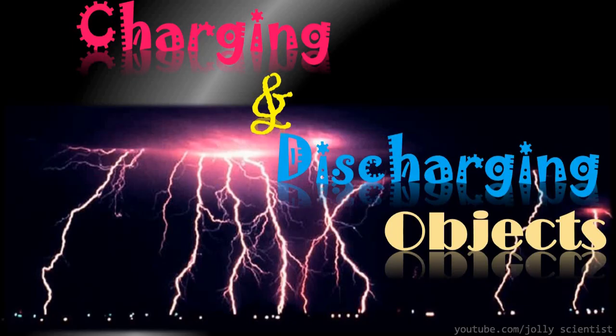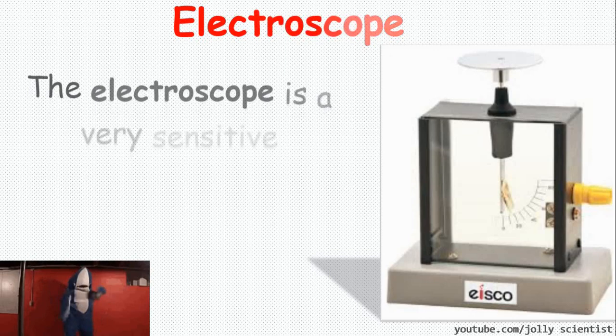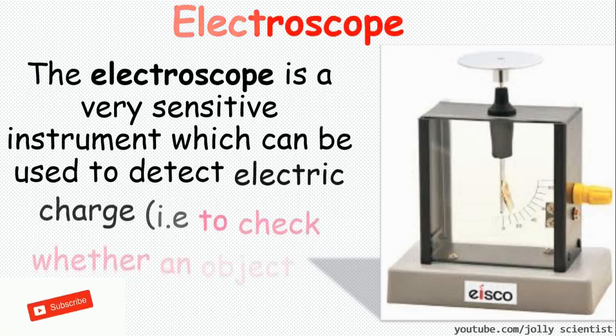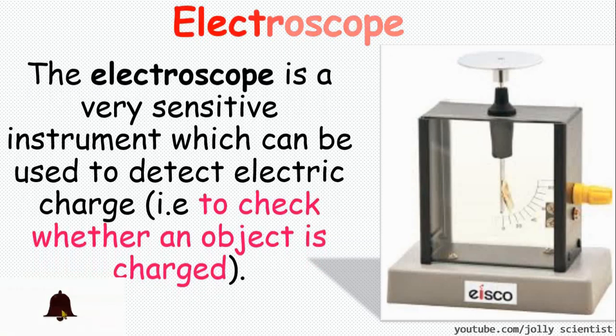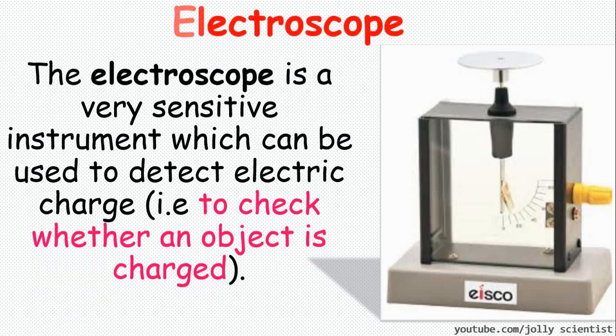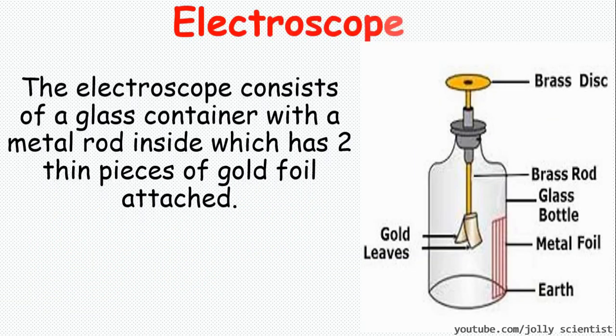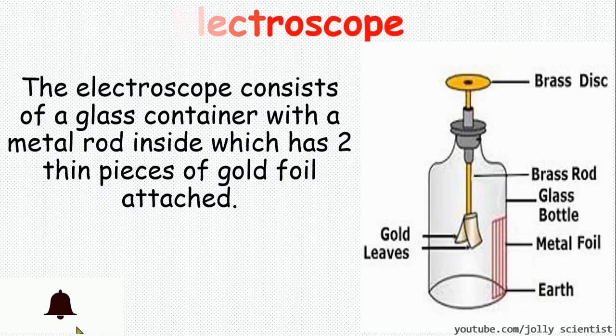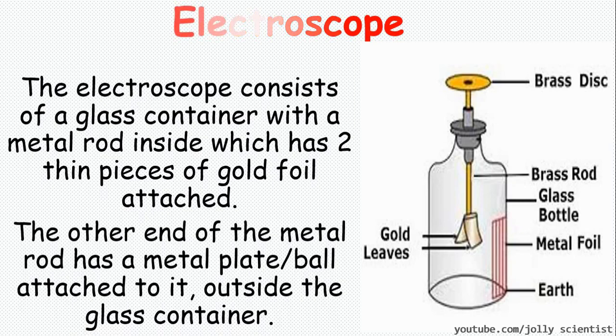Charging and discharging objects. Electroscopes. The electroscope is a very sensitive instrument which can be used to detect electric charge, thus to check whether an object is charged or not. The electroscope consists of a glass rod container with a metal rod inside, which has two thin pieces of gold foil attached. The other end of the metal rod has a metal plate or a ball attached to it outside the glass container.